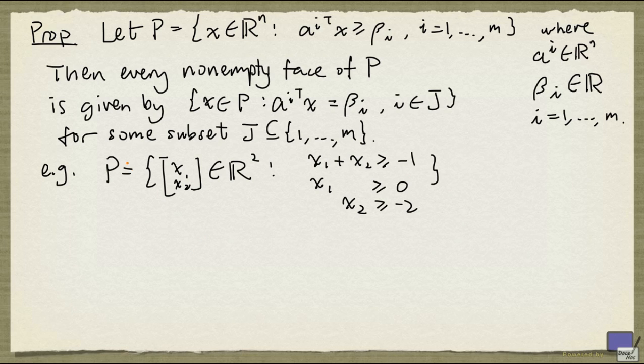So we can enumerate all the faces of P by setting all possible subsets of inequalities to equalities. Now, it is quite possible that setting some of these inequalities to equality will give us an empty set. And in that case, we'll just get what is called the empty face.